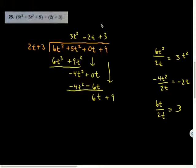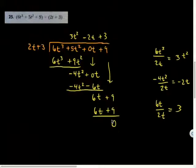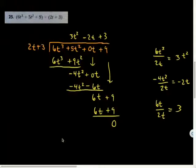So plus 3 in the constants. Multiply: 3 times 2t is 6t, 3 times 3 is 9. Oh no, they didn't, remainder of 0. That's right, 3t squared minus 2t plus 3.